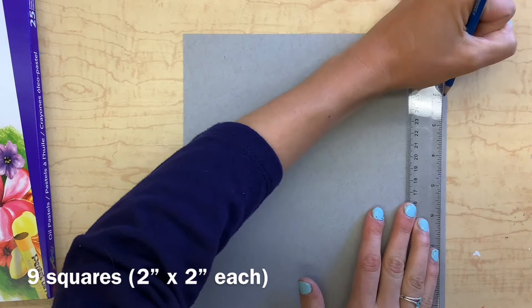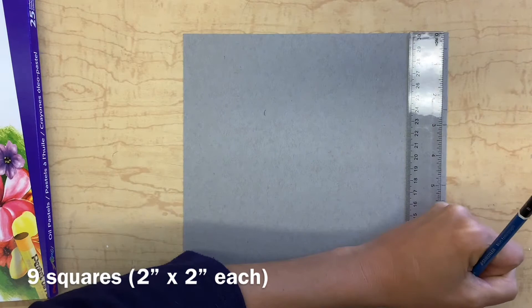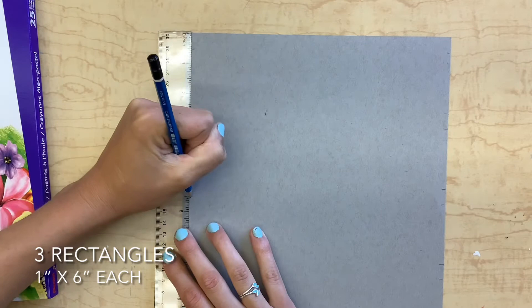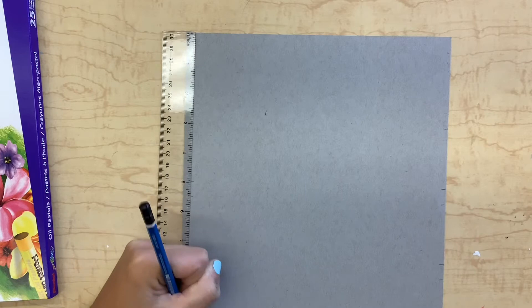To start off we're going to make some squares and rectangles to put our oil pastel techniques in. You're going to make nine squares that are two inches by two inches and then three rectangles that are one inch by six inches. What I like to do is mark along both sides half an inch just to give a little bit of space.